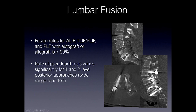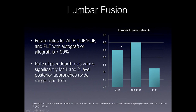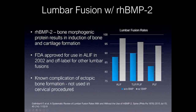In lumbar fusion, fusion rates for different types with autograft and allograft can approach 90% — really a range of 80% to 90%. The rate of pseudoarthrosis varies significantly for single and two-level posterior approaches. Lumbar fusions can be performed with recombinant bone morphogenetic protein (BMP), which induces bone and cartilage formation. The FDA approved this for anterior lumbar interbody fusions in 2002. A known complication of BMP is ectopic bone formation, so it's not used in cervical procedures. Lumbar interbody fusion rates with BMP tend to be higher than without BMP.